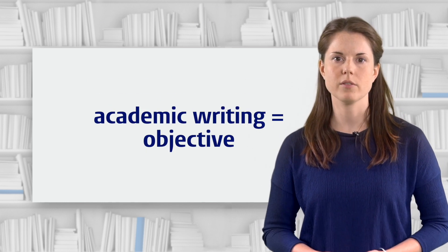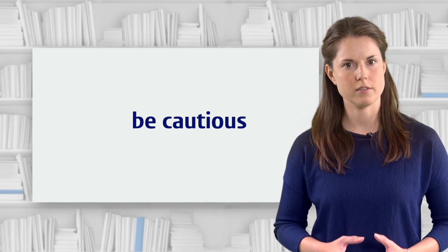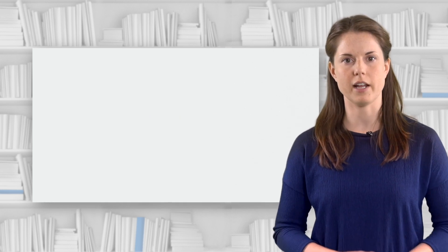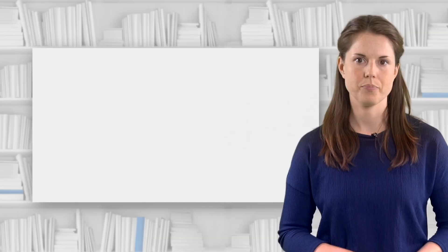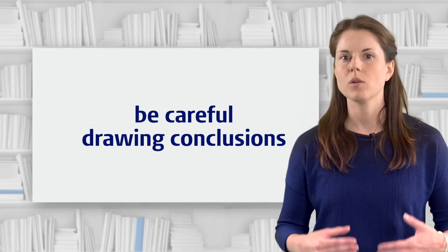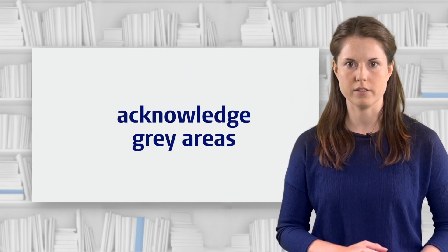So academic writing presents evidence objectively, but we also need to be cautious in how we present that evidence. We call this kind of cautious language tentative language. As well as tentative language or cautious language, you might also hear the term hedging. All of these terms come down to the same thing: being careful about drawing conclusions and acknowledging grey areas.